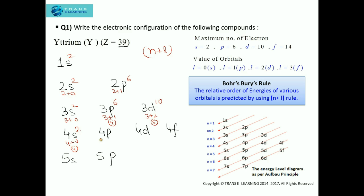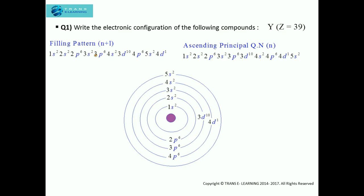Continuing with the remaining 9 electrons: 4p has n+l=5, 4d has n+l=6, 4f has n+l=7, and 5s has n+l=5. So out of 4p and 5s (both n+l=5), fill 4p first (lower n): 4p gets 6 electrons, leaving 3 more. Then comparing 5s (n+l=5) and 4d (n+l=6): fill 5s with 2 electrons. Finally, 4d has lower n+l than 4f, so fill 4d with the last 1 electron. We do not use the 4f or 5p orbitals. For the final electronic configuration, we use ascending principal quantum number.